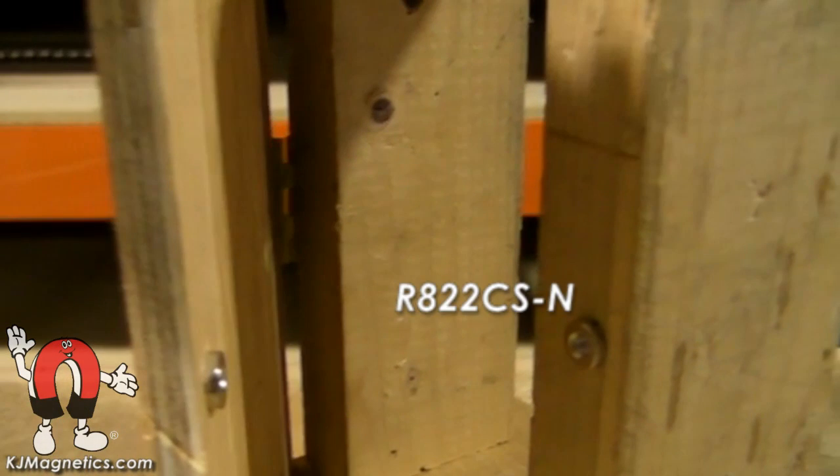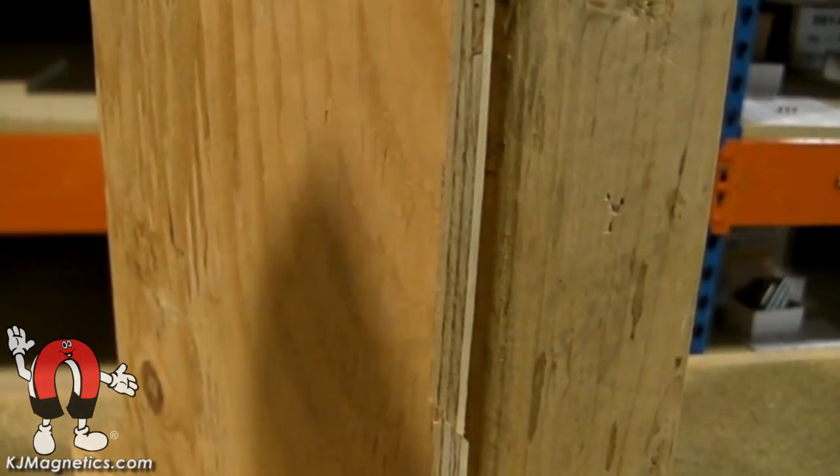In the second example, we use a pair of the countersunk rings. One north on the frame, and one south on the door. It's important to remember that when using this method, always make sure both of the rings are correctly aligned.